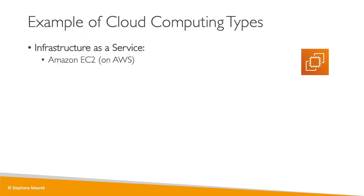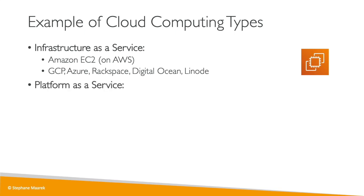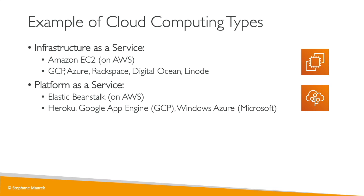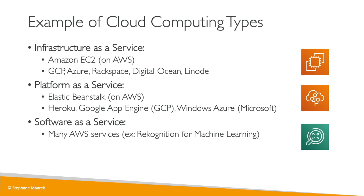With IaaS, we can use Amazon EC2 on AWS, but we also have other services such as Google Cloud, Azure, Rackspace, DigitalOcean, and Linode, which provide cloud computing infrastructure as a service. Platform as a Service also exists on AWS with Elastic Beanstalk, and outside of AWS we have Heroku, Google App Engine, and Windows Azure. For Software as a Service, AWS represents many services — for example, Rekognition for machine learning — but we've also been using it in the real world with Google Apps such as Gmail, Dropbox, or Zoom for meetings.